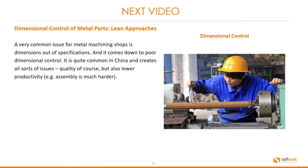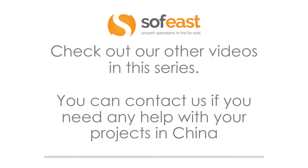In the next video, we're going to be looking at dimensional control of metal parts with a lean approach. A very common issue for metal machining shops is dimensions out of specifications, which comes down to poor dimensional control. It is quite common in China and creates all sorts of issues — quality, of course, but also lower productivity; for example, assembly is much harder. Don't forget to check out our other videos in this series, and you can contact us if you need any help with your projects in China.